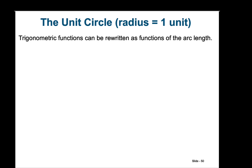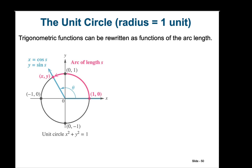It turns out that trigonometric functions can be rewritten as functions of arc lengths. So far we've been writing them as functions of theta, the angle measure, but we can also write them as functions of the arc length. This has something to do with radians, because we just talked about how radians are the measures of arc lengths.